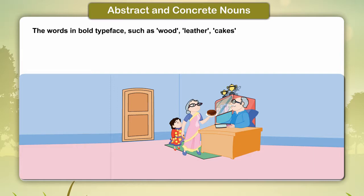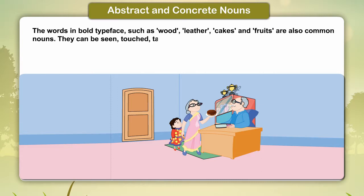The words in bold typeface such as wood, leather, cakes and fruits are also common nouns. They can be seen, touched, tasted or smelled. These types of common nouns are called concrete nouns.